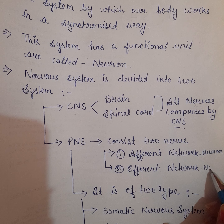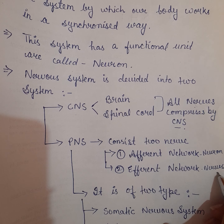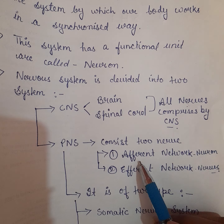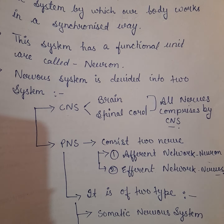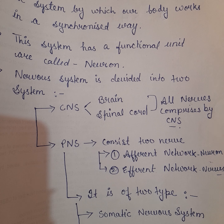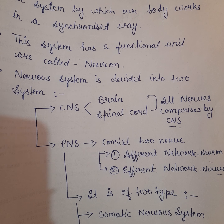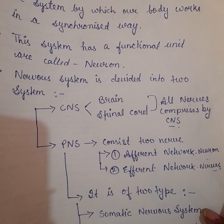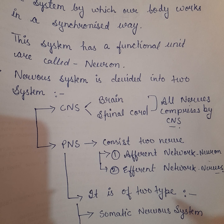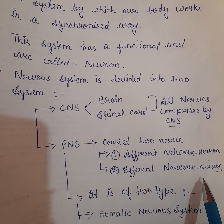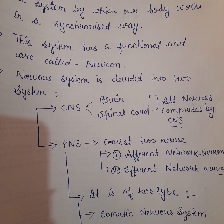Afferent neurons ka kaam hota hai kisi bhi signal ko CNS se un organs tak le jaana jo hamare liye voluntary hain, jabki efferent neurons ka kaam hota hai CNS se signals ko un organs tak le jaana jo hamare involuntary hain.